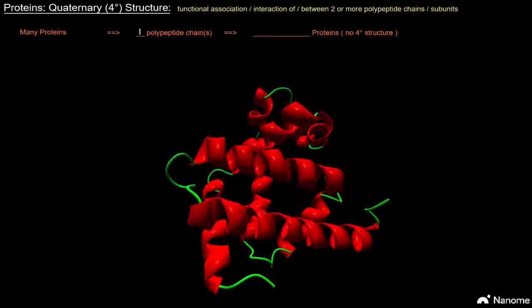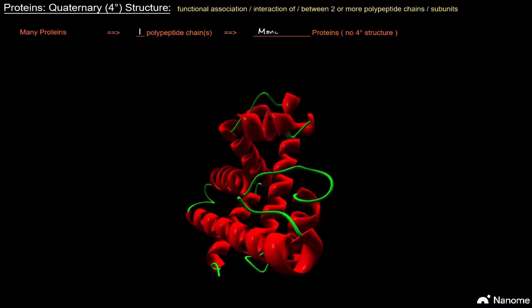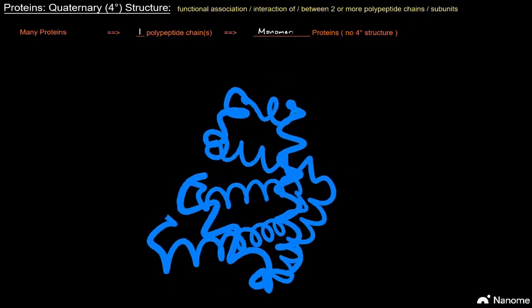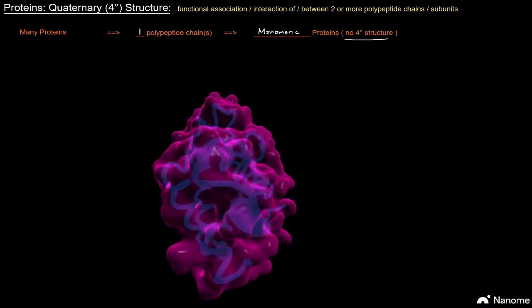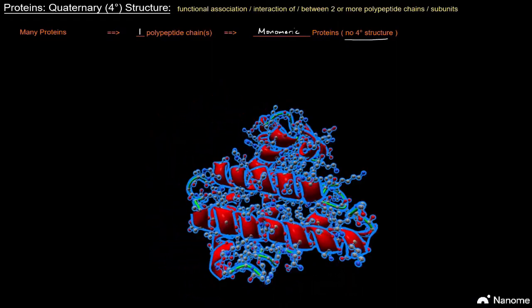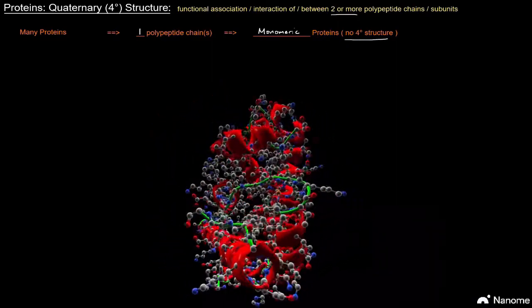And so they are called monomeric proteins, mono meaning one, monomeric. And so they have no quaternary structure because for quaternary structure you have to have two or more polypeptide chains.